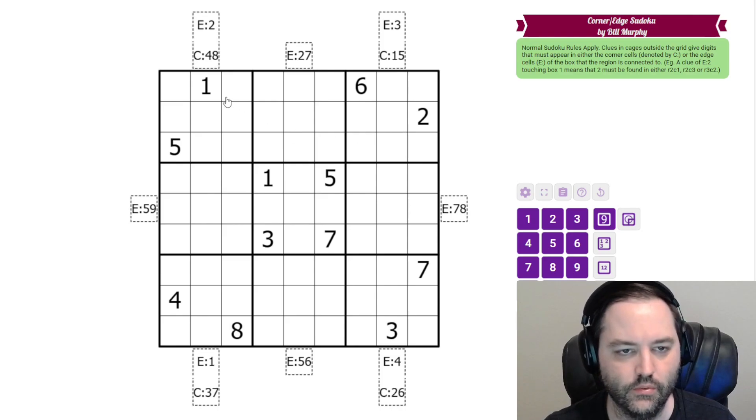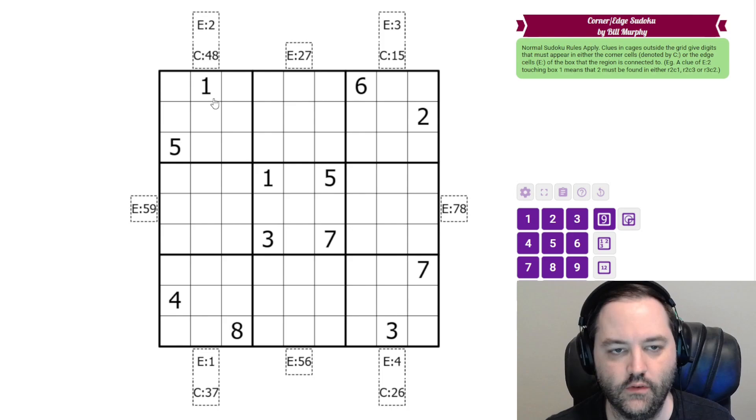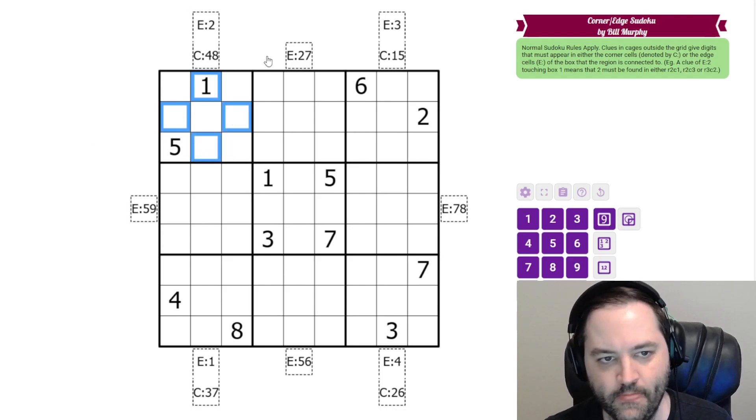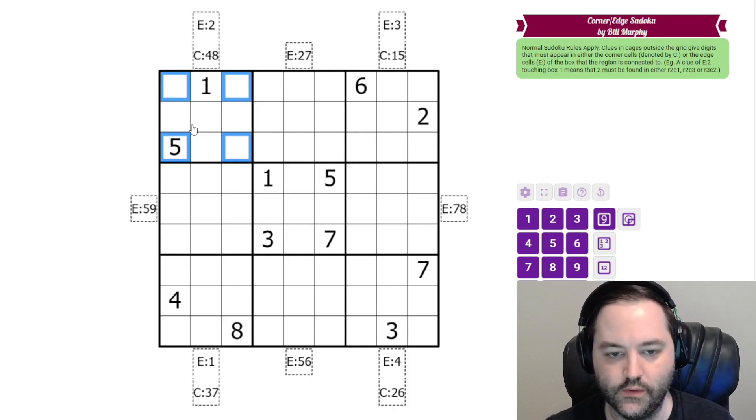In addition to normal Sudoku rules, 1-9 in each row, column, and 3x3 box, we also have these clues outside the grid, and they tell us digits that must go in an edge cell of a box. So here we have an E2, that means 2 is in one of the edge cells in box 1. We also have clues for the corner cells. This C48 is telling us that both 4 and 8 must go in corner cells in box 1. And the clue applies to whatever box it is touching. And that's it, that's the rule.